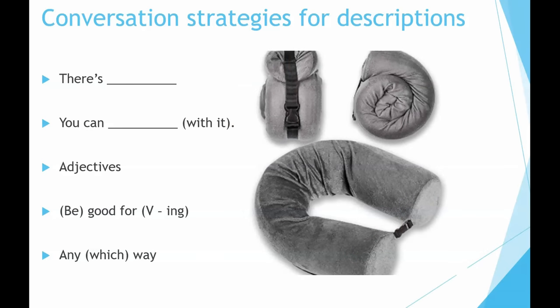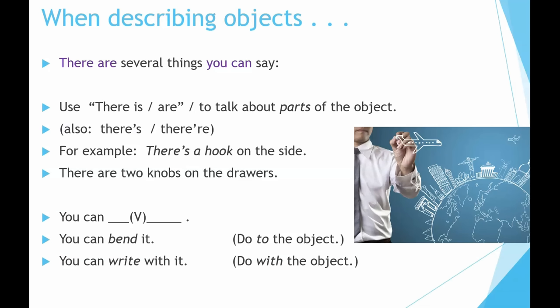Conversation strategies for descriptions: 'there's,' 'you can with it,' adjectives, 'be good for,' verb-ing, 'any which way.' When describing objects, there are several things you can say. Use 'there is' or 'there are' to talk about parts of the object. For example: 'There's a hook on the side.' 'There are two knobs on the drawers.'